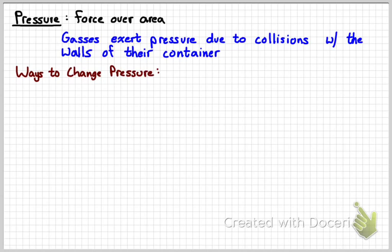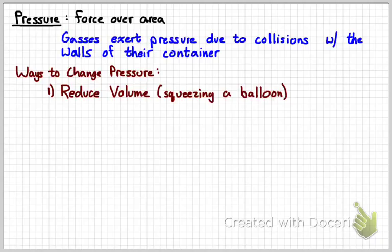So the air in a balloon exerts pressure simply because the air is running into the walls of the balloon. There's three ways we could change the pressure of a system. One is to reduce the volume, like squeezing a balloon. The pressure gets too high and the balloon pops because you squeeze it. What you're doing is increasing the pressure while you reduce the volume.